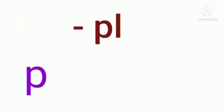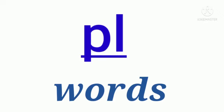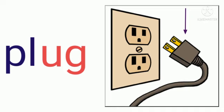Hello everyone, today we will learn initial consonant blends: PL. P makes the sound P, L makes the sound L. Together they make the sound PL. Let us practice initial consonant blends of PL words. PL-UG, Plug. PL-UG, Plug. PL-I, Ply.